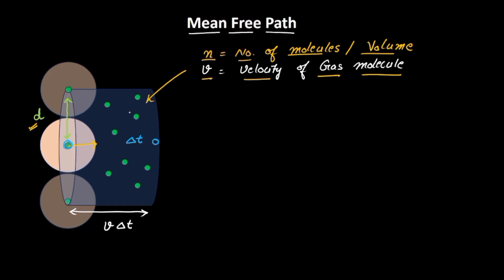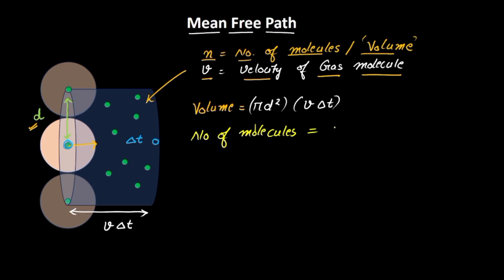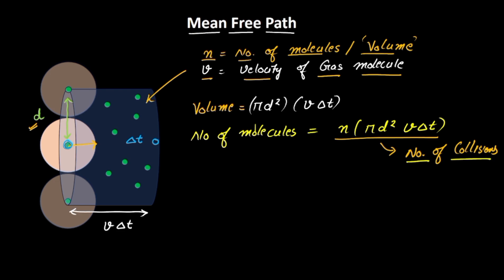In order to find the total number of molecules in this cylindrical section, we first find the volume of the cylinder: volume equals area multiplied by height, so the area is pi d squared multiplied by the height V times delta t. Since n is the number of molecules per unit volume, the total number of molecules in this section equals n times pi d squared times V delta t. This also equals the number of collisions occurring. So the number of collisions per unit time equals n pi d squared times V delta t divided by delta t, which gives n pi d squared times V.